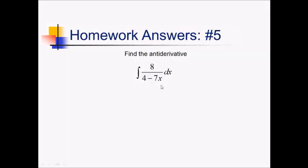For this problem, we'd love to use the ln function to take the antiderivative here, but since I have a linear argument to that ln function, I have to divide by the derivative of this thing. So, I'm going to have 8 ln of absolute value of 4 minus 7x, all of that divided by negative 7. So, that's actually going to be negative eight-sevenths ln of this stuff in absolute value, plus c.